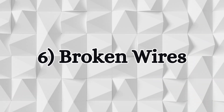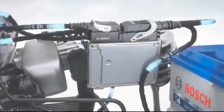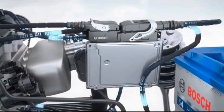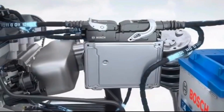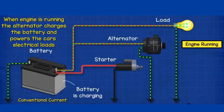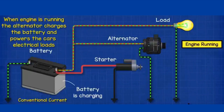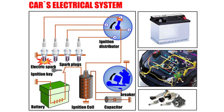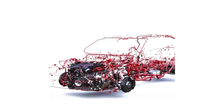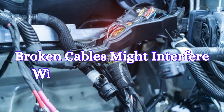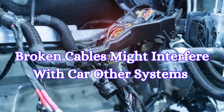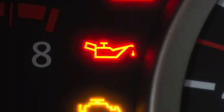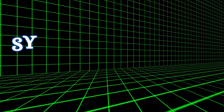Six: broken wires. All the electrical lines in the car are connected to the engine, which supplies power to every part that needs to operate. The electrical system is a critical component of the vehicle, but is also very delicate. Broken cables might interfere with the car's other systems and trigger the limp mode.